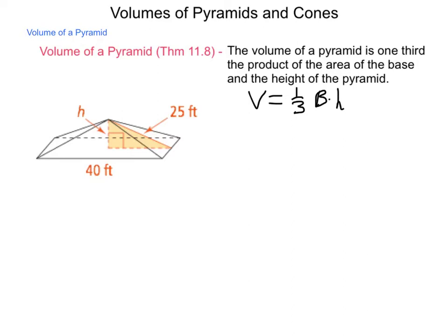Now you might remember that base area times height is the volume of a prism. So a pyramid is simply one-third of its comparable prism.